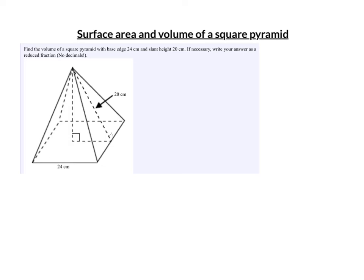The surface area and volume of a square pyramid. A pyramid is named by its base — if the base is a square, it's a square pyramid, like the Egyptian pyramids. The base could also be a triangle, making it a triangular pyramid; a hexagon makes it a hexagonal pyramid; and a pentagon makes it a pentagonal pyramid.